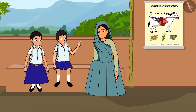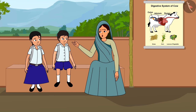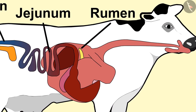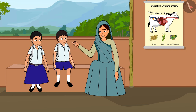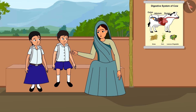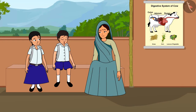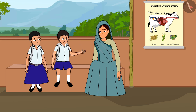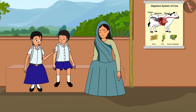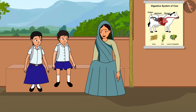The digestive system of human beings does not have a rumen, isn't it Kaki? Yes, you are right Ravi. Here the food gets partially digested and is known as Kud. Later this Kud returns to the mouth in small parts and the cow chews it — as shown in this drawing. Oh, that is why the cow continuously chews — it chews on this Kud. Yes, these animals are called ruminants and the process is known as rumination. Absolutely right, Rani.